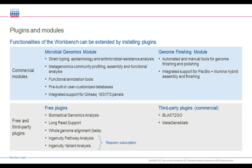The genome finishing module allows you to automate and manually finish and polish your genomes — for example, plasmids or smaller genomes like yeast. If you don't get them finished in the first iteration, there are tools for primer design and polishing at later stages. It comes with integrated support for PacBio and Illumina hybrid assembly and finishing. For free plugins, we have the biomedical genomics analysis plugin with all the workflows for human, mouse, and rat.